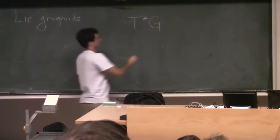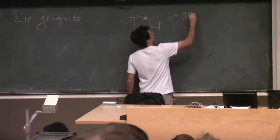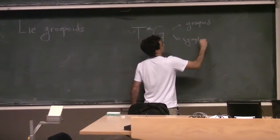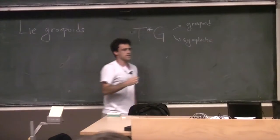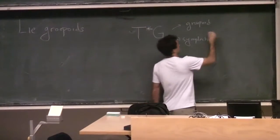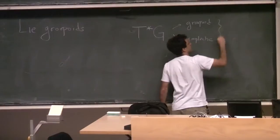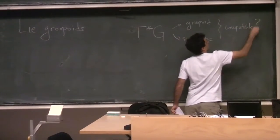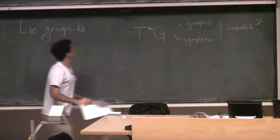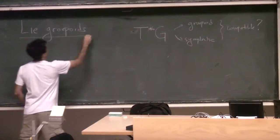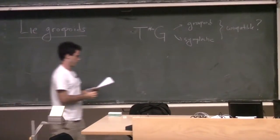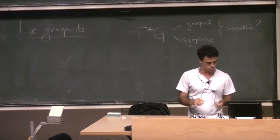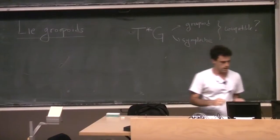Now let's move to groupoids so I can define more multiplicative structures. The prototypical example to have in mind, for those interested in Poisson geometry, is the cotangent bundle of a Lie group. We know this is canonically a symplectic manifold. But as we'll see, this also has a group-like structure reminiscent of the fact that you're not taking the cotangent bundle of any manifold, but of a Lie group. This will be a groupoid naturally, and also a symplectic manifold. The next step is to explain in which sense they are compatible.